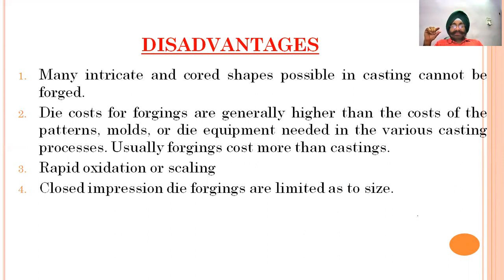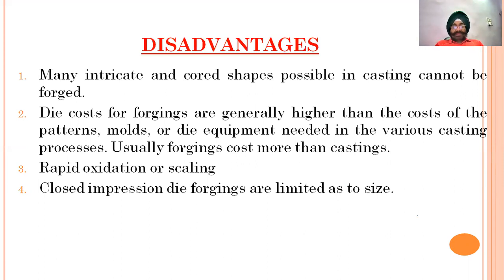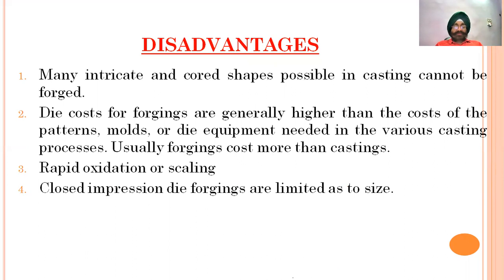The disadvantages of forging include: hollow shapes with empty interior portions are very difficult to forge. Die cost is very high. Forging cost is more than casting if die forging quantity is less. Third is rapid oxidation and scaling because hot forging is involved. Fourth, closed impression die forging is limited as to size — with closed dies, large sizes are not advantageous.